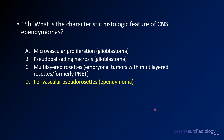The characteristic histologic feature of ependymomas is perivascular pseudorosettes. For reference, microvascular proliferation and pseudopalisading necrosis are associated with glioblastomas or high-grade gliomas; multilayered rosettes are associated with embryonal tumors with multilayered rosettes (formerly ETANTR/PNETs). Perivascular pseudorosettes are the ones associated with ependymomas.